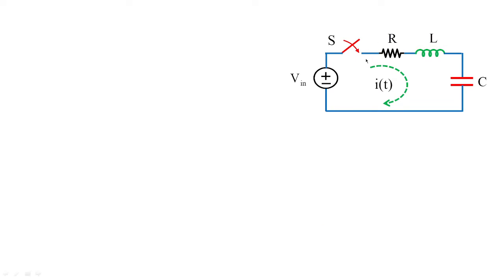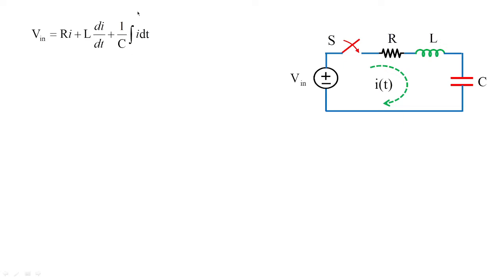Once the switch is closed, Vin is connected to the passive elements and the current starts flowing. I'm going to employ Kirchhoff's Voltage Law in order to find out the transient current. As the switch is closed, the input supply voltage is equivalent to Ri plus the drop across the inductor L·di/dt plus the drop across the capacitor (1/C)∫i dt. We are going to frame this as equation 1.